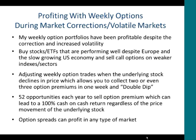What I like to do is buy stocks or ETFs that are performing well despite Europe and the slow-growing U.S. economy, and then sell call options against those stocks on weaker indexes or sectors. This is essentially a spread strategy where you're long stocks that are performing well and you're short markets that are very weak, like Brazil and China, energy and commodities.